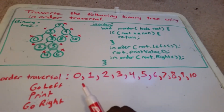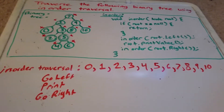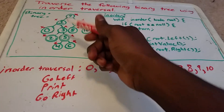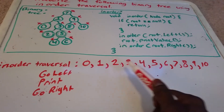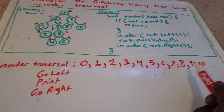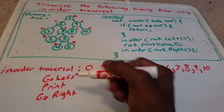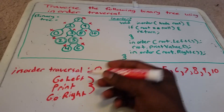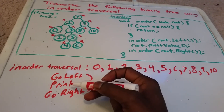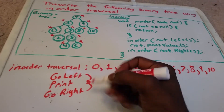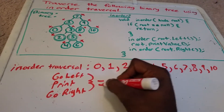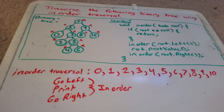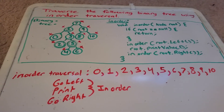The cool thing about the inorder traversal on a binary search tree is that it literally puts the numbers in order. This is the basic way of understanding it: just go left, print the value, then go right — that is basically inorder. Thank you guys, and I'll see you in the next video.